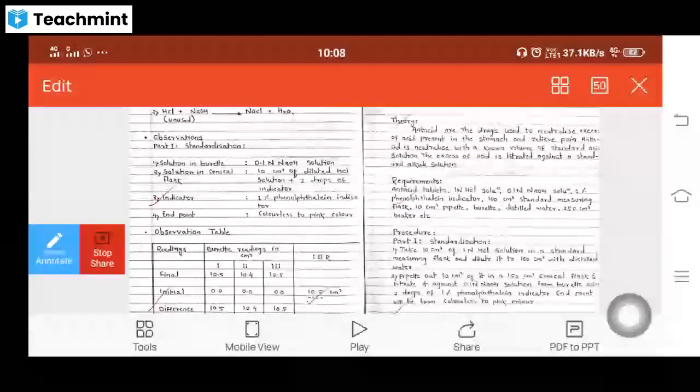Hydrochloric acid (HCl) is present in the stomach. Requirements: We need 0.1 normal HCl solution, phenolphthalein indicator, 100 cm³ standard measuring flask, 10 cm³ pipette, burette, distilled water, and 250 cm³ beaker.